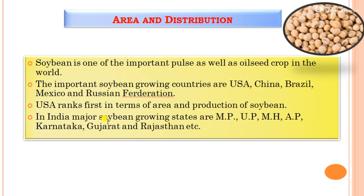In India, the major soybean growing states are Madhya Pradesh, Uttar Pradesh, Maharashtra, Andhra Pradesh, Karnataka, Gujarat, and Rajasthan.